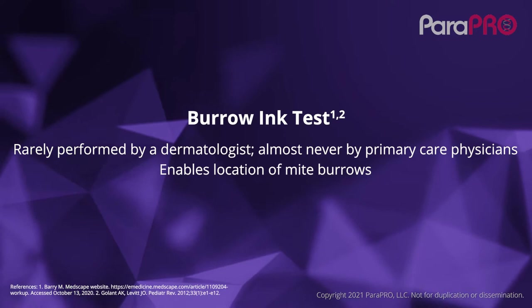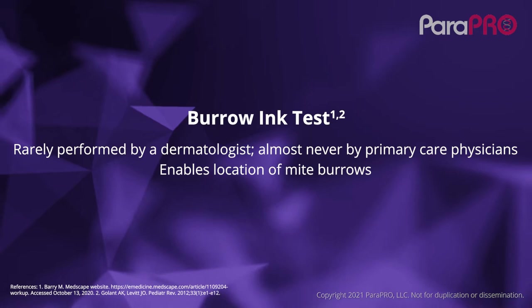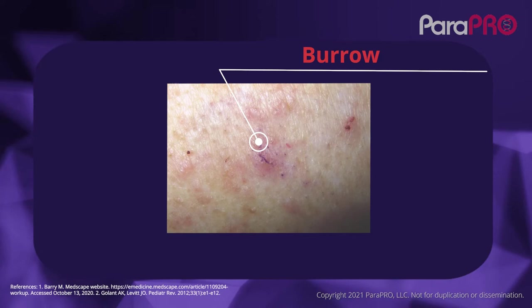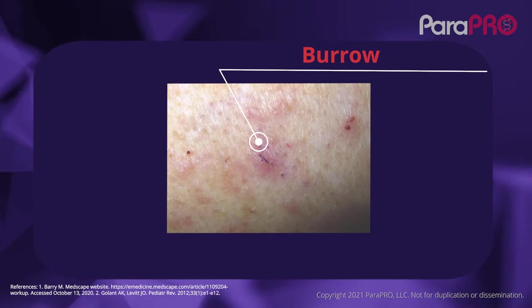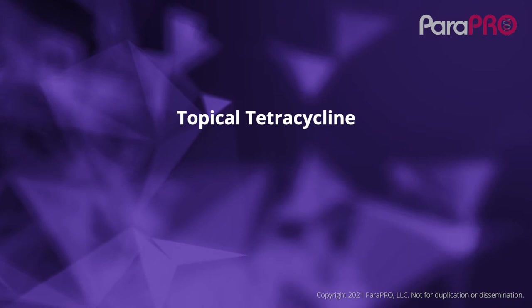The burrow ink test initially used India ink that was utilized in fountain pens. Currently, magic markers may be used, rubbed on the lesions, wiped off with alcohol, and the residual — demonstrated in the picture here as a purple trail — represents the burrow. This test is rarely performed by dermatologists. It may be useful in children or in trying to identify or confirm the presence of a burrow.